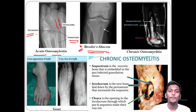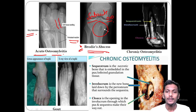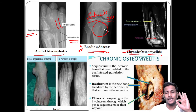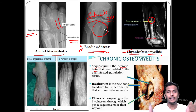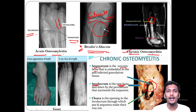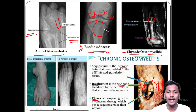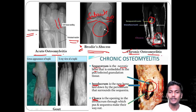Brody's abscess is seen in subacute osteomyelitis — it is an abscess with a sclerotic border. In chronic osteomyelitis, three features are important: sequestrum (necrotic bone surrounded by pus or infected granulation tissue), involucrum (dense new bone formation around the sequestrum), and cloaca (the opening through which pus drains from the involucrum — the pus sinus).